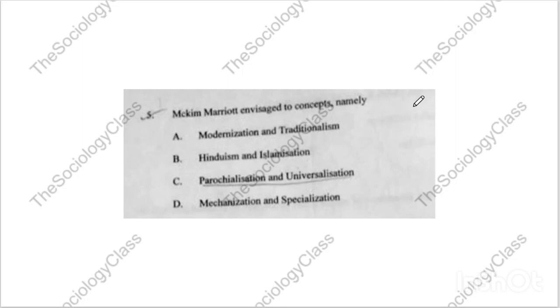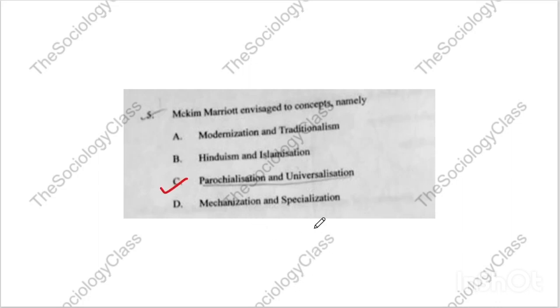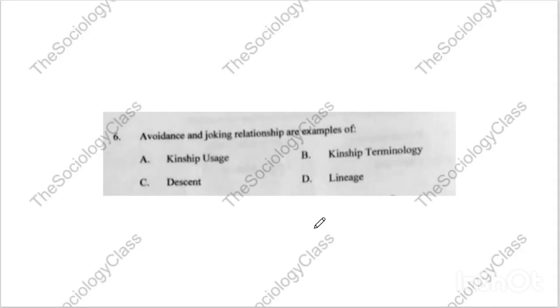Question number five asks about two concepts — the options include modernization and traditionalism, Hinduism and Islamization, parochialization and universalization, or mechanization and specialization. The correct answer is of course C — parochialization and universalization.